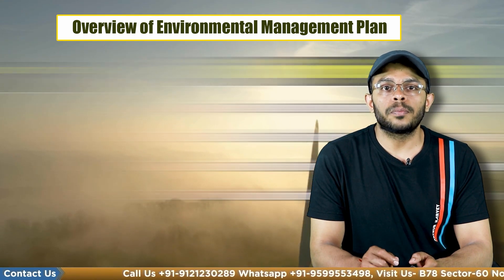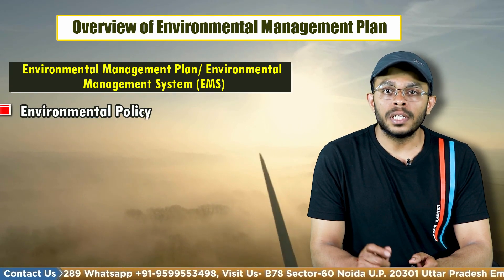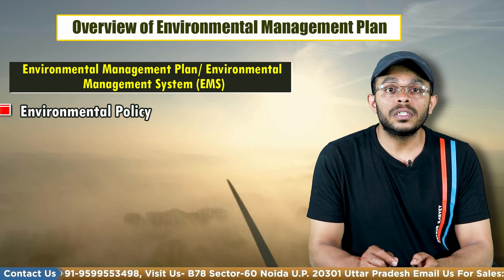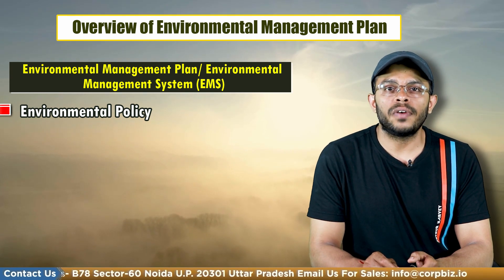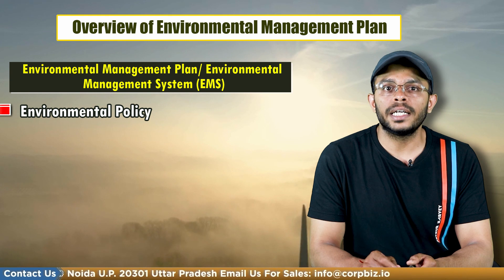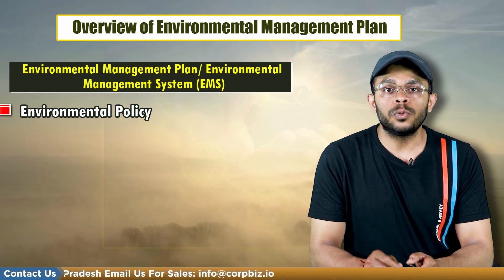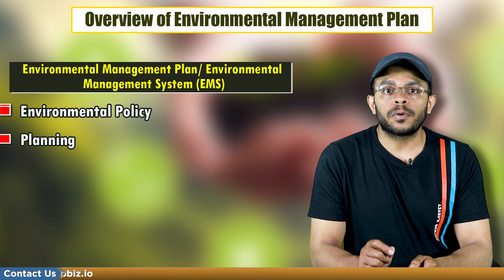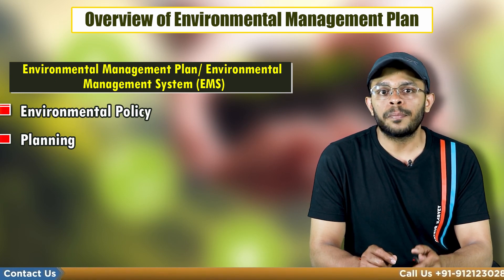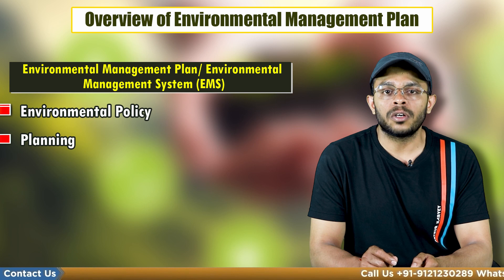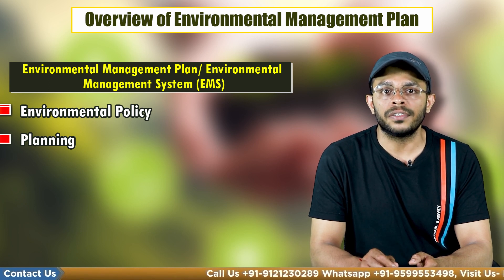Let's come to the process of environmental management planning. Step 1 includes environmental policy. The process of developing an EMP begins with the establishment of an environmental policy that is linked to the organization's objective. Step 2 is planning: identifying the processes, resources and significant impacts by identifying pollution prevention opportunities and developing objectives and targets for improved efforts.